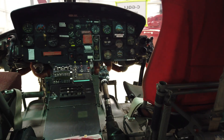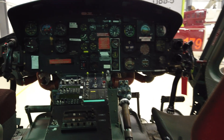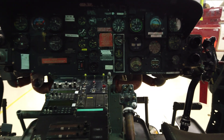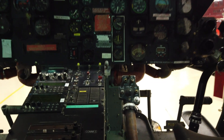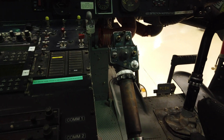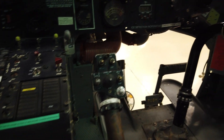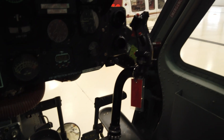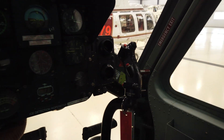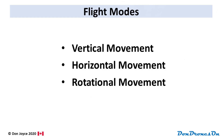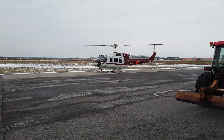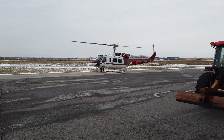And even though drones and helicopters share the lift-generating, rotating airfoil technology, how they are controlled in flight is remarkably different. Let's check out those same three flight modes — vertical, horizontal, and rotating — for helicopters. We'll use the classic single rotor helicopter as our example.